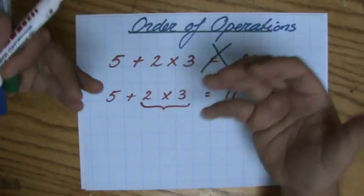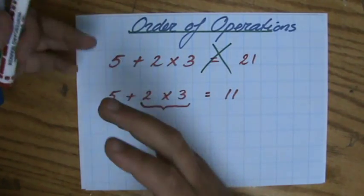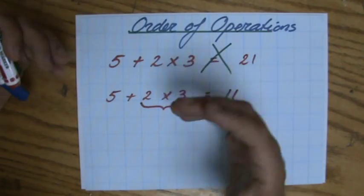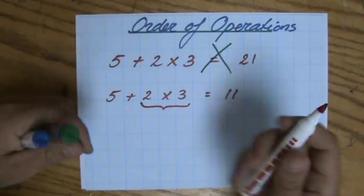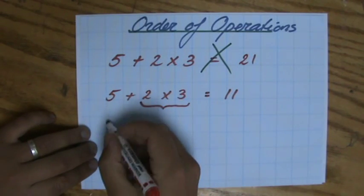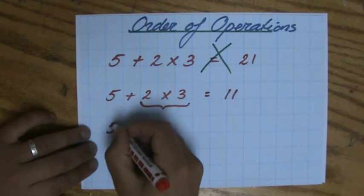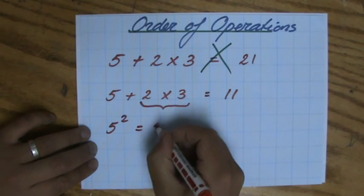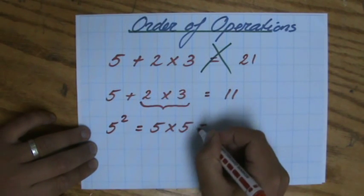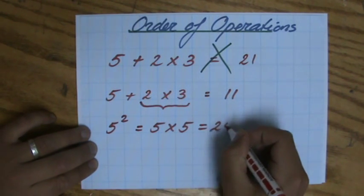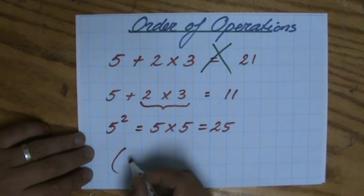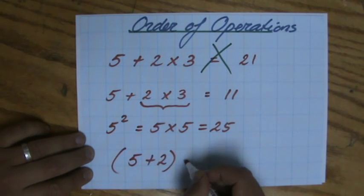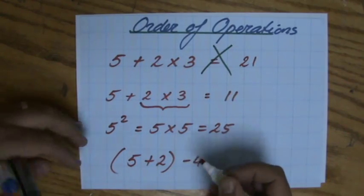What different types of operations do we have? We have addition, subtraction, multiplication, division. We have indices — do you know what an index is? Like 5 to the power 2, that's an index or order as some people say, which means 5 times 5, so 25. And then we have brackets as well, like 5 plus 2 inside brackets minus 4, for instance.